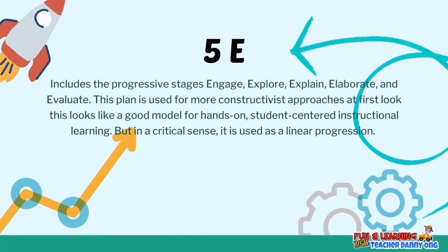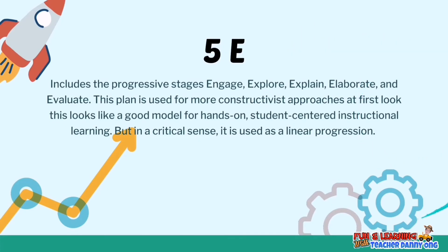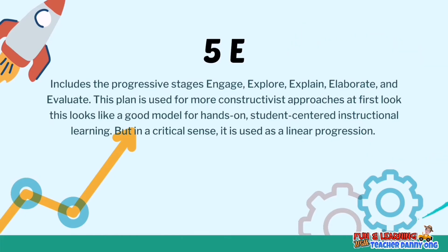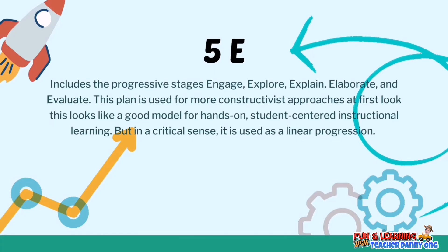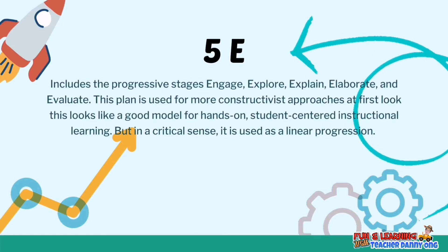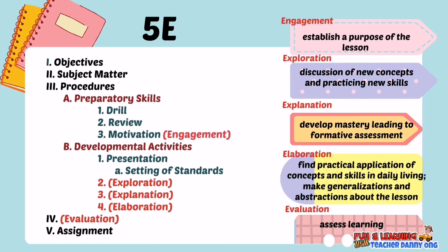We also have Roger Bybee's 5E model, which includes the progressive stages of Engage, Explore, Explain, Elaborate, and Evaluate. This plan is used for more constructivist approaches. At first look it appears to be a good model for hands-on, student-centered instructional learning, used as a linear progression. We start with Engagement, then Exploring, Explaining, and Elaborating follow, and Evaluating wraps up the process. The 5E parts are placed alongside the universal parts to show that 5E does not remove the essential parts — its linear progression helps the teacher build a strong knowledge foundation through active participation.